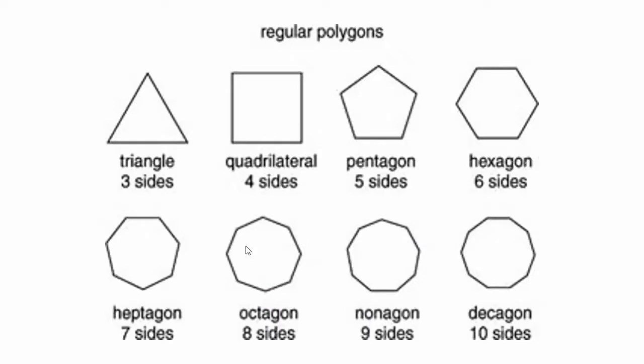Here's an example of the different kinds of regular polygons: we've got a triangle, quadrilateral, pentagon, hexagon, heptagon, octagon, nonagon, and decagon.